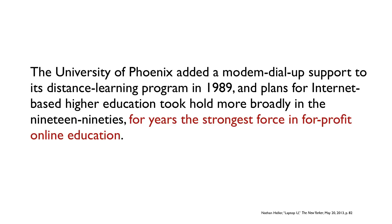Appositives function as free modifiers. They can be put in different places in sentences — at the beginning, splitting subjects and verbs, or at the end. But the appositive has to go apposite to the noun or noun phrase that it is describing, defining, or adding more information to.